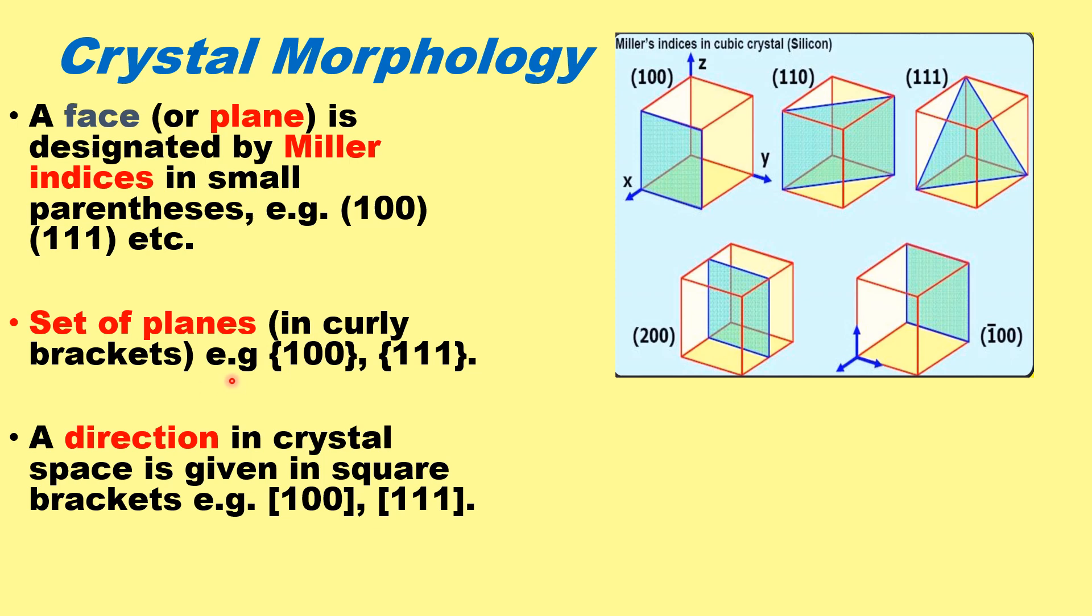The set of planes is shown in curly brackets. For example, {100} means the set of all planes 100, 111, etc. Direction is shown by square brackets, like [100] direction.